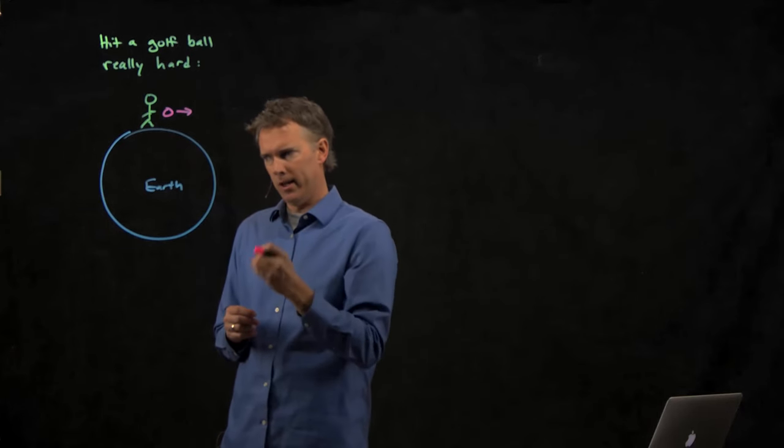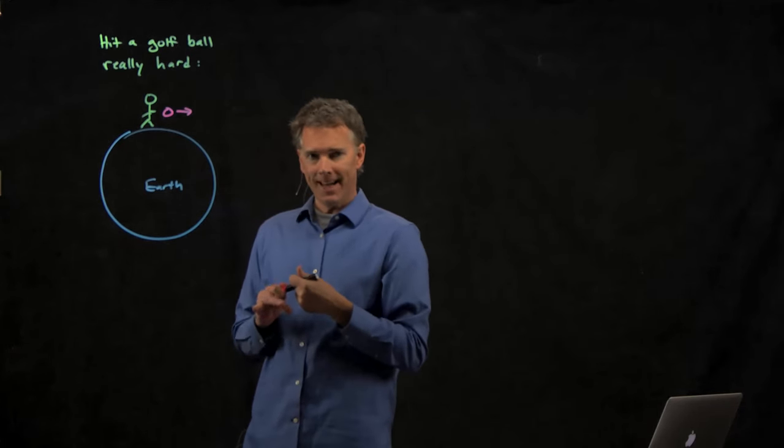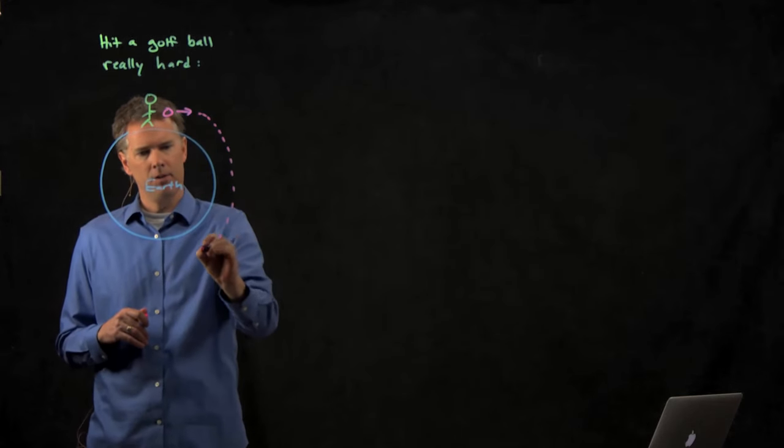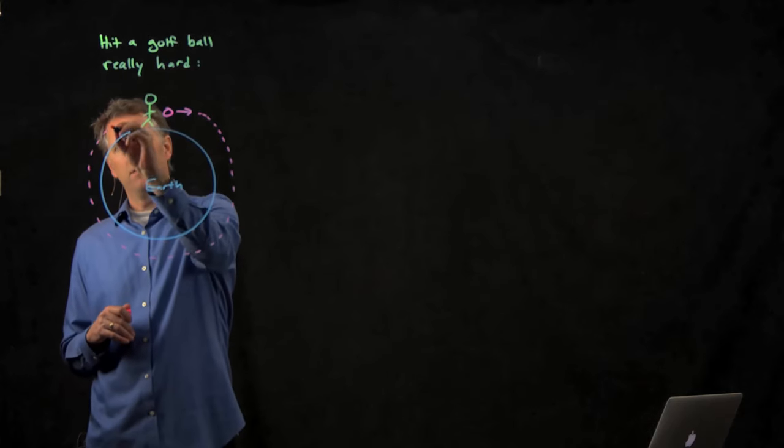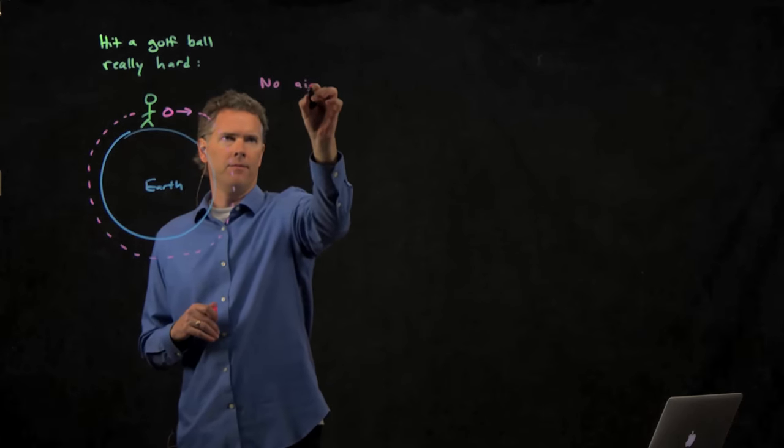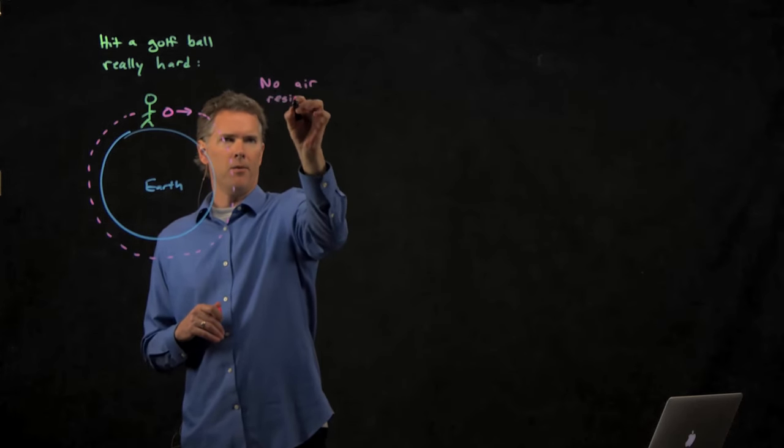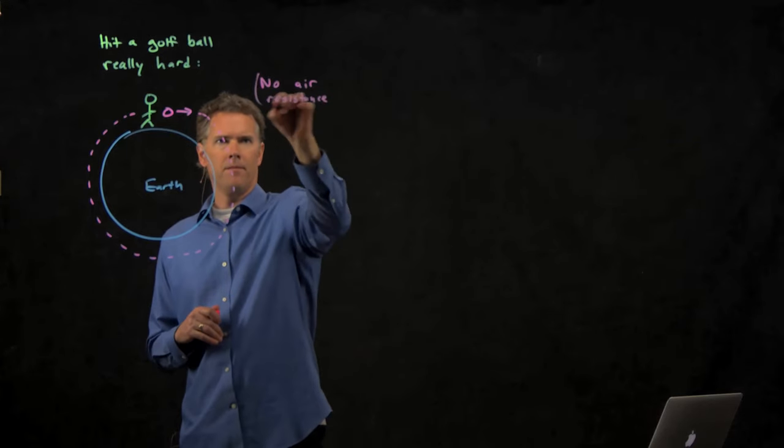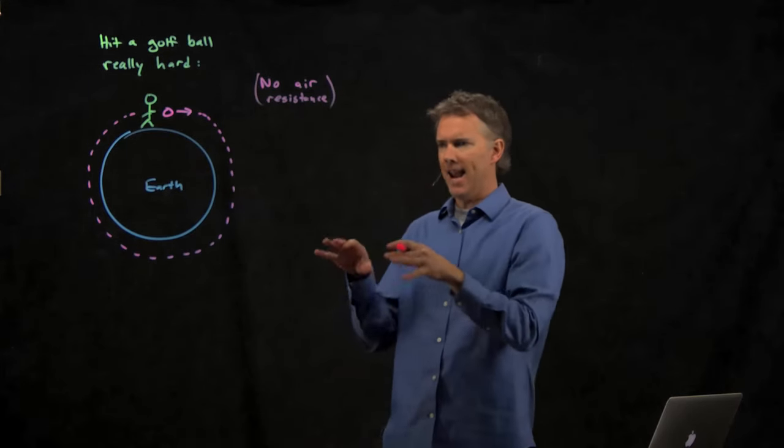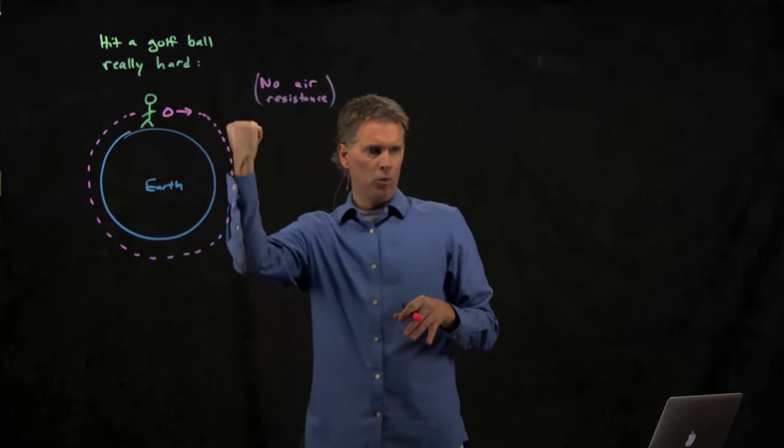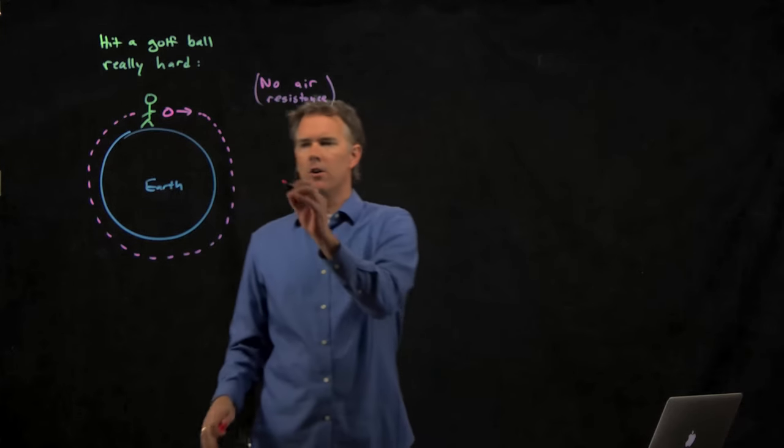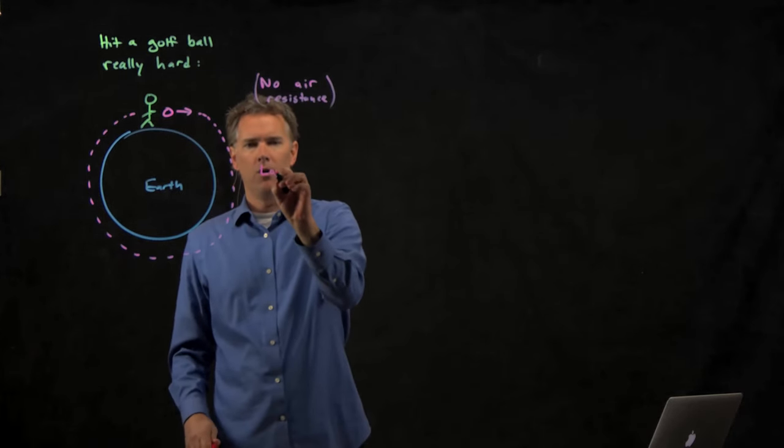But if I hit it really, really hard, we could get to a point where this thing orbits the earth. No air. Forget about air resistance here. So you're standing on an airless earth. You hit this golf ball really hard such that it orbits. This is called a low earth orbit.